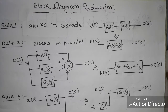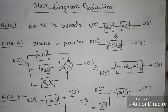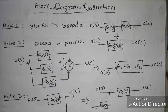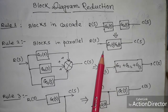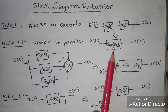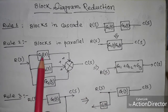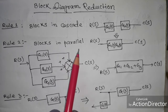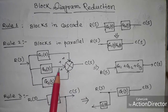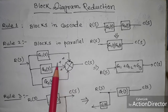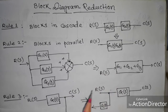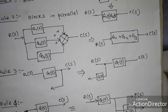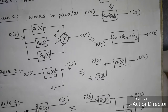There are ten rules in total, but here I will cover only four rules, which are very important to do this reduction. Rule 1: when blocks are in cascade, like G1(s) and G2(s), after block reduction this will be G1(s) times G2(s) — multiplication. Rule 2: when blocks are in parallel, like G1(s), G2(s), G3(s) all connected to a summing block with positive signs, the result is G1(s) plus G2(s) plus G3(s) — addition.